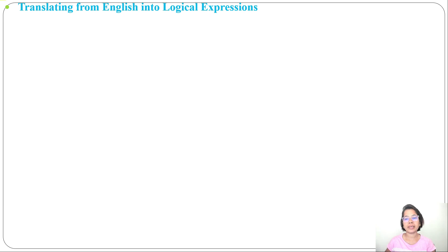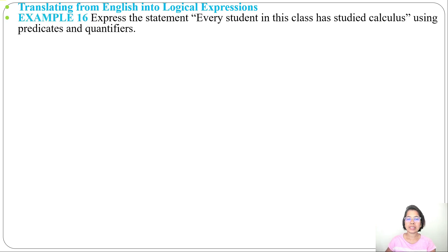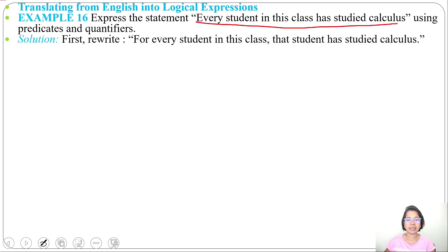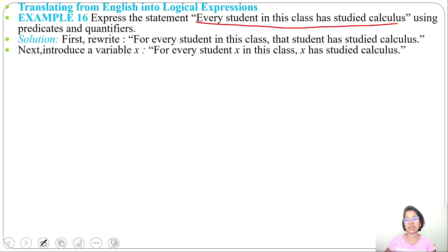Having already discussed predicates and quantifiers, let's discuss how we can translate English sentences into logical expressions. First example 16: the statement is 'every student in the class has studied calculus.' First, rewrite the sentence as: for every student x in this class, that student has studied calculus.